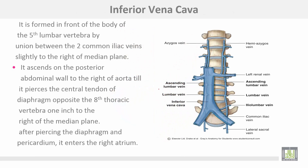The inferior vena cava is formed in front of the body of the fifth lumbar vertebra by the union of the two common iliac veins, slightly to the right of the median plane. It ascends on the posterior abdominal wall to the right of the aorta, pierces the central tendon of the diaphragm opposite the eighth thoracic vertebra — one inch to the right of the median plane — and after piercing the diaphragm and pericardium, it enters the right atrium.